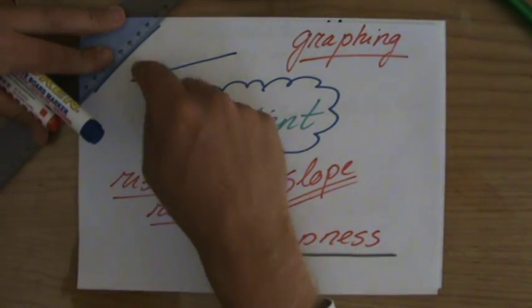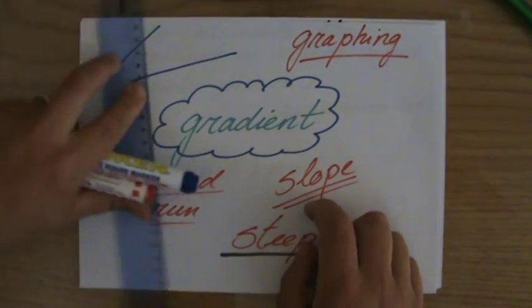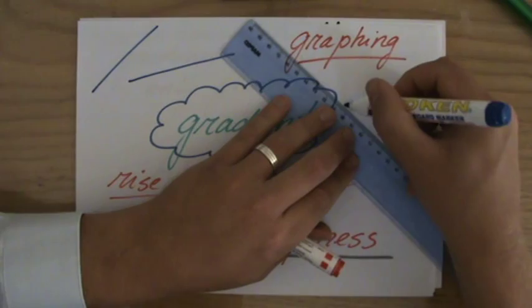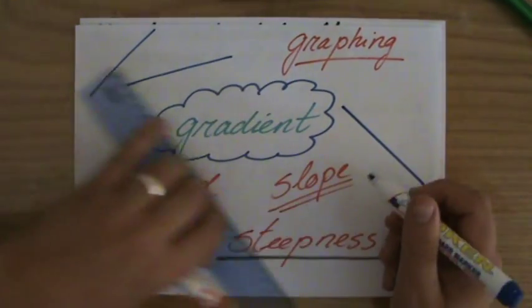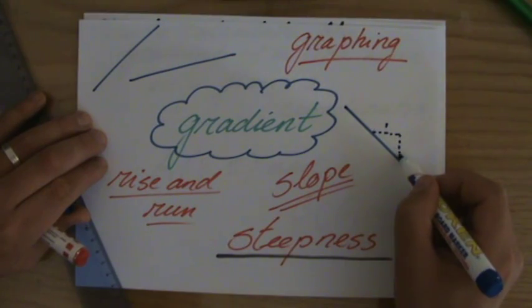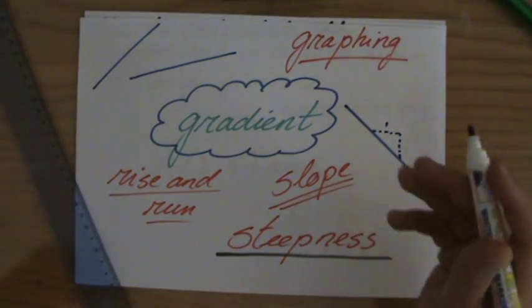Lines that go up have a positive gradient. If you go one step to the right, how many steps do you go up? But lines that go down, for instance, this line will have a negative gradient, because if you go one step to the right, you go a negative amount of steps up. You're actually going down.